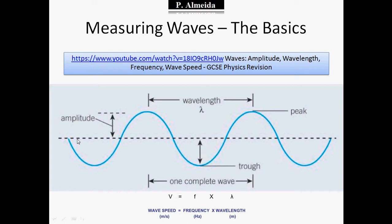First, you need to know how to describe a wave — stuff like amplitude, wavelength, peak, trough, and all that, along with the key definitions. Second, you need to know this formula: wave speed in meters per second equals frequency in Hertz times wavelength in meters. Go to the GCSE video for anything I don't cover here today.